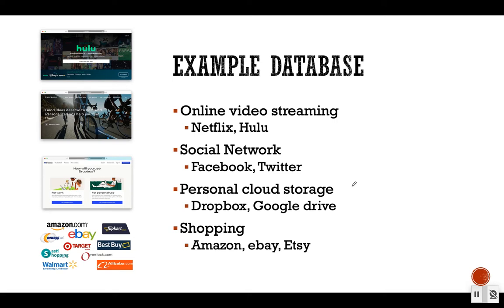Another example is online shopping. Amazon, eBay, Etsy, Target, Walmart — all of them are using online platforms. The purpose of these online platforms is to store all the information about their products and all the information about their users. When they have information about which user is buying which product, they can make better recommendations.